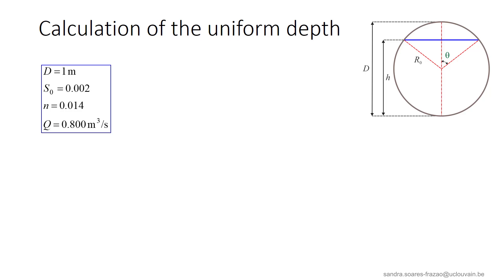Let us illustrate this by an example. We have a concrete pipe of 1 meter diameter installed with a bottom slope of 0.2%. The Manning friction coefficient is 0.014. We want to check if this pipe can accept a discharge of 800 liters per second.